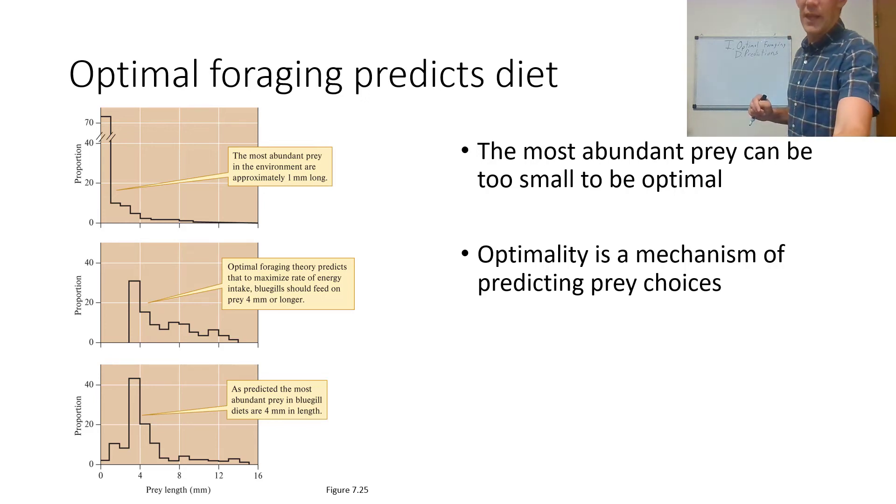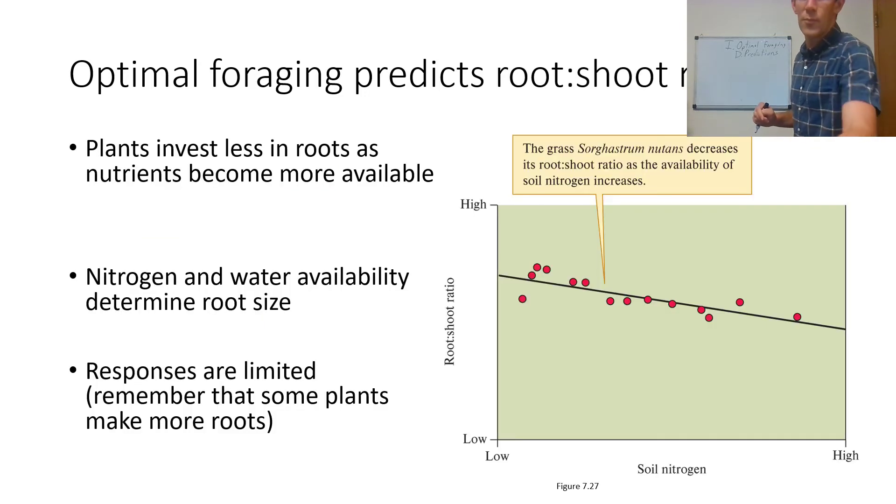We can also, interestingly, see this in the spread of roots. Each root that a plant puts out is going to essentially represent a search. That is a search for nutrients as opposed to a search for prey.